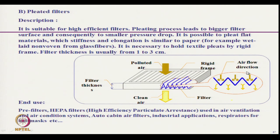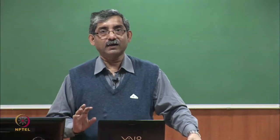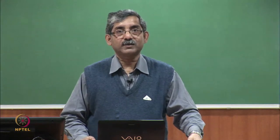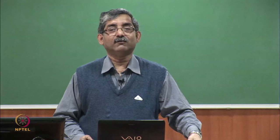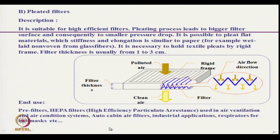The next type of filter based on shape is the pleated filter. The filters are in the form of pleats, and air flows with less pressure since all the pleated area is exposed for airflow. This filter can be used as a HEPA filter — high efficiency particulate arrestant — where high filtration efficiency can be achieved with lower pressure drop, enabling use of filters with smaller pore sizes. These are used in industry and as cabin air filters.